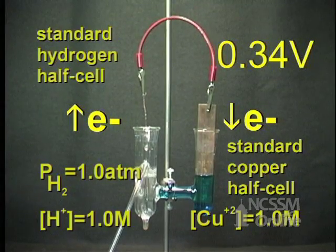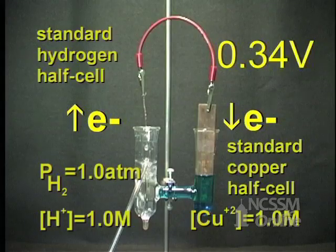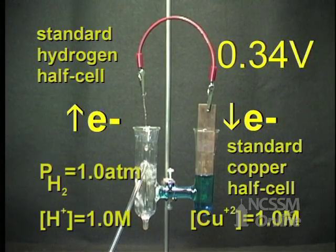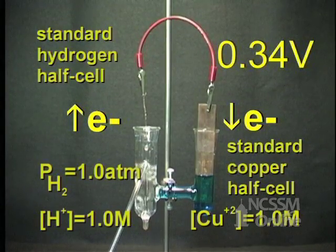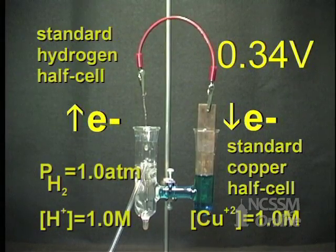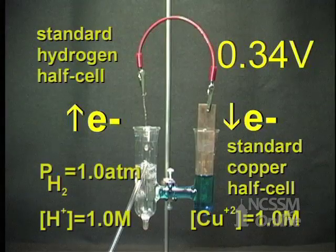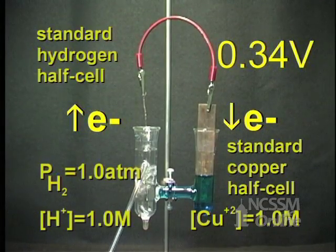This indicates that the copper half cell has a greater electron attracting ability than the hydrogen half cell. Half cells with a greater electron attracting ability than the standard hydrogen electrode are assigned a positive sign. The standard copper half cell has a voltage of positive 0.34 volts.